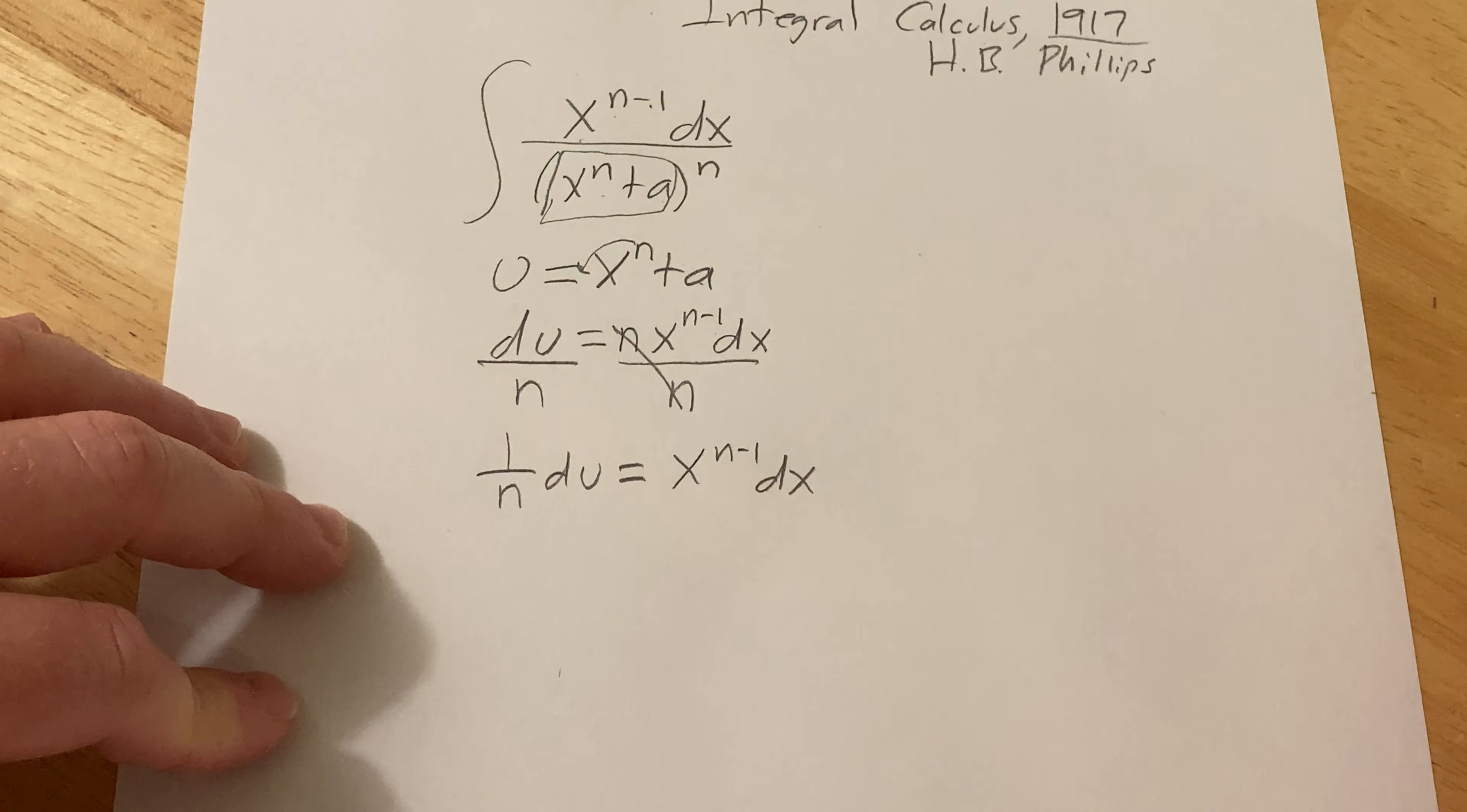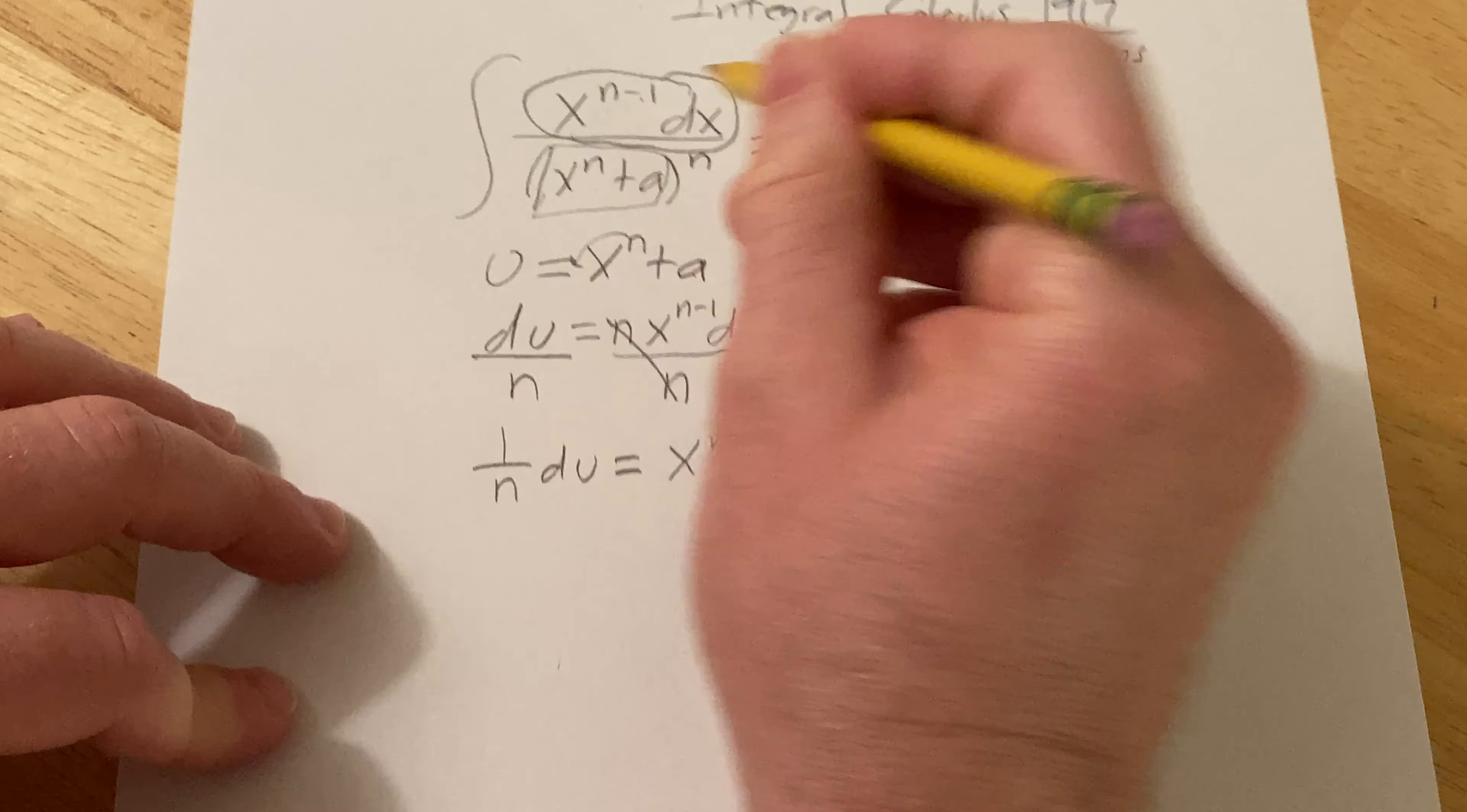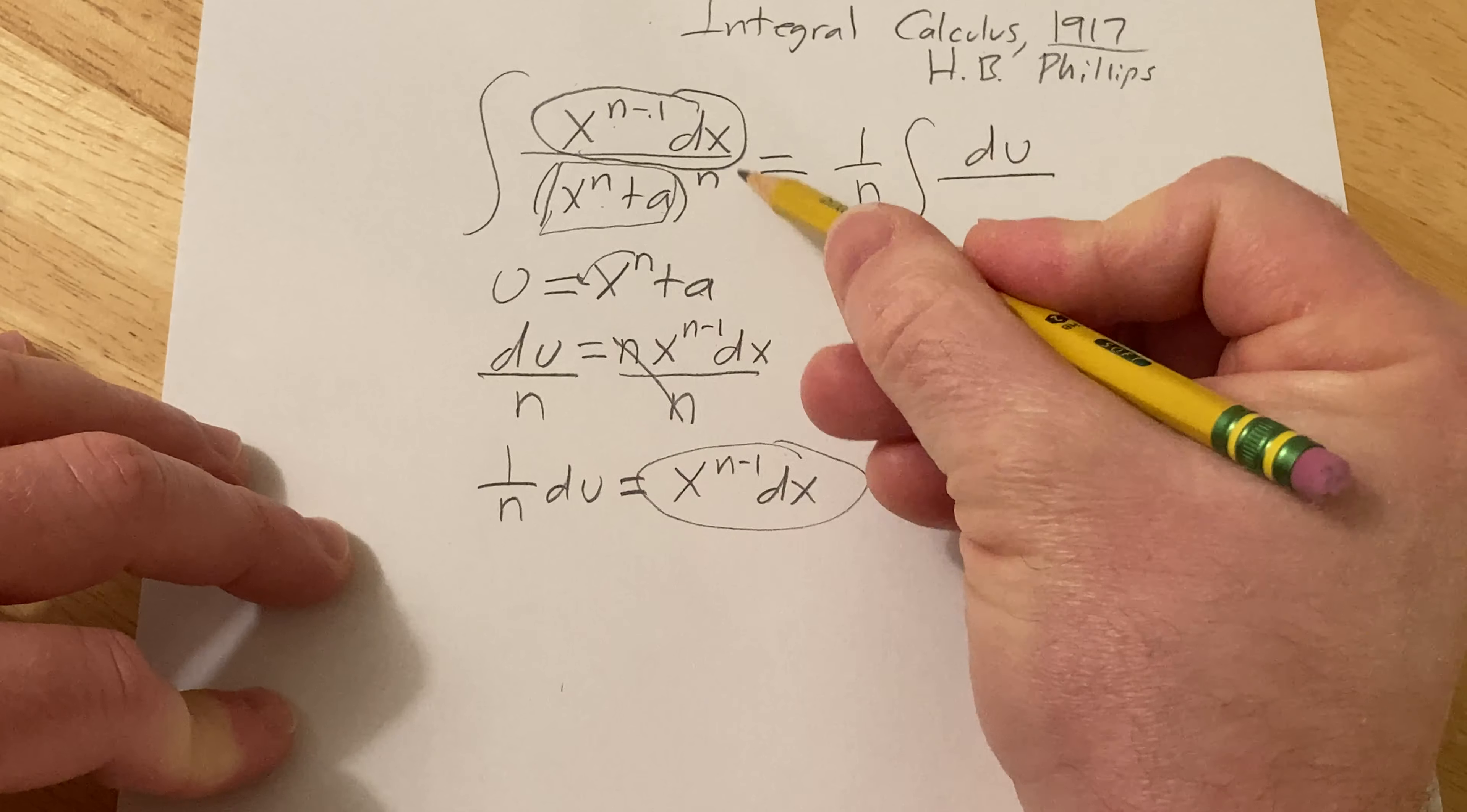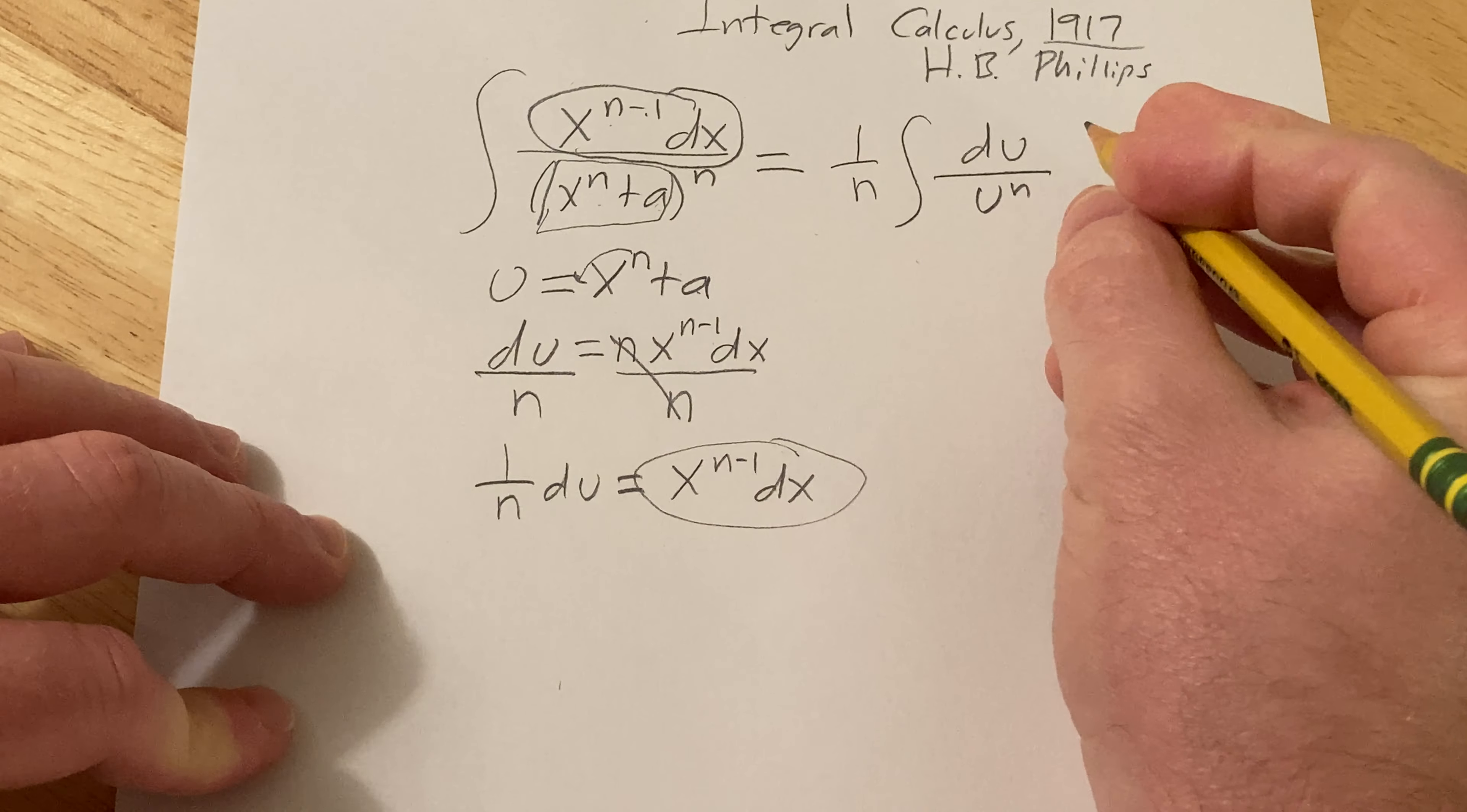Alright now we're ready to make the substitution. So this is equal to, so all of this is right here. So it'll be 1 over n du. And then on the bottom we just have this piece which is just u to the n. Cool right?